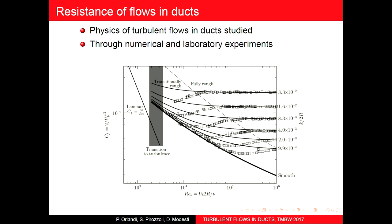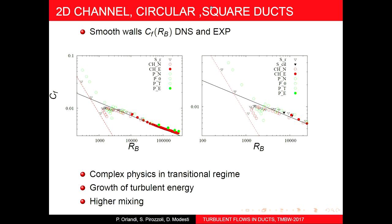The most interesting region to me is the transition from laminar to turbulent. Since we are using DNS — direct numerical simulation — this transitional region is the most appropriate to study, because experimentally it is quite difficult to measure accurately what is going on in transitional flows.